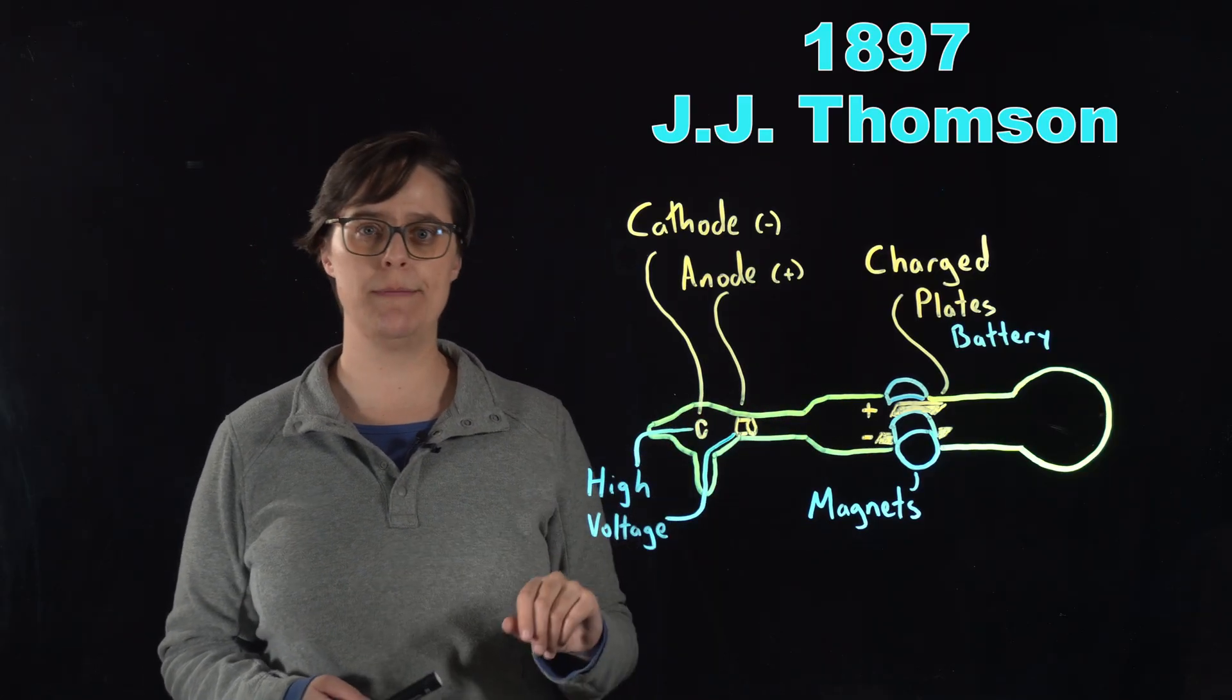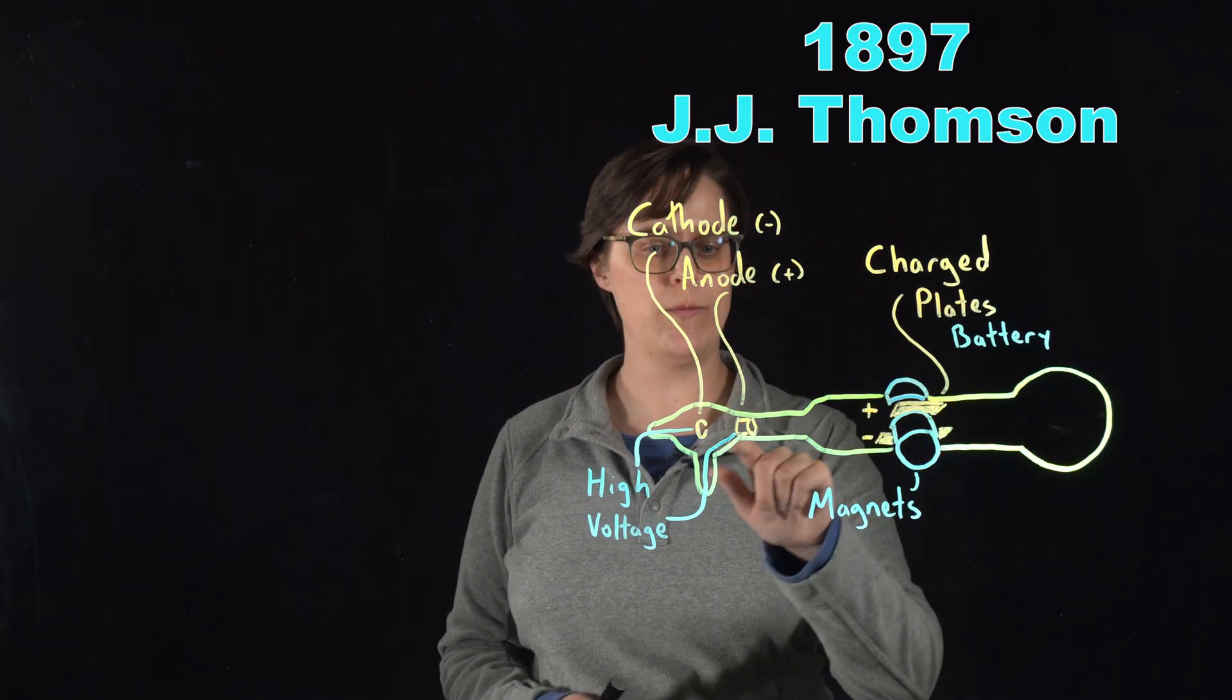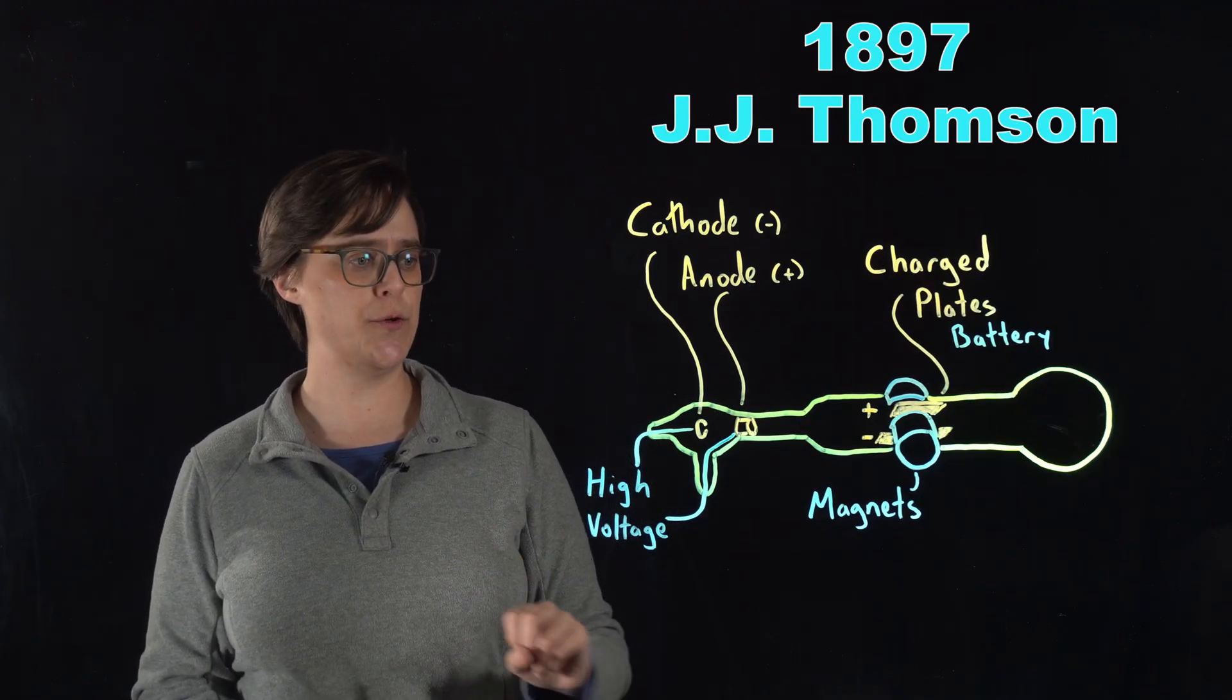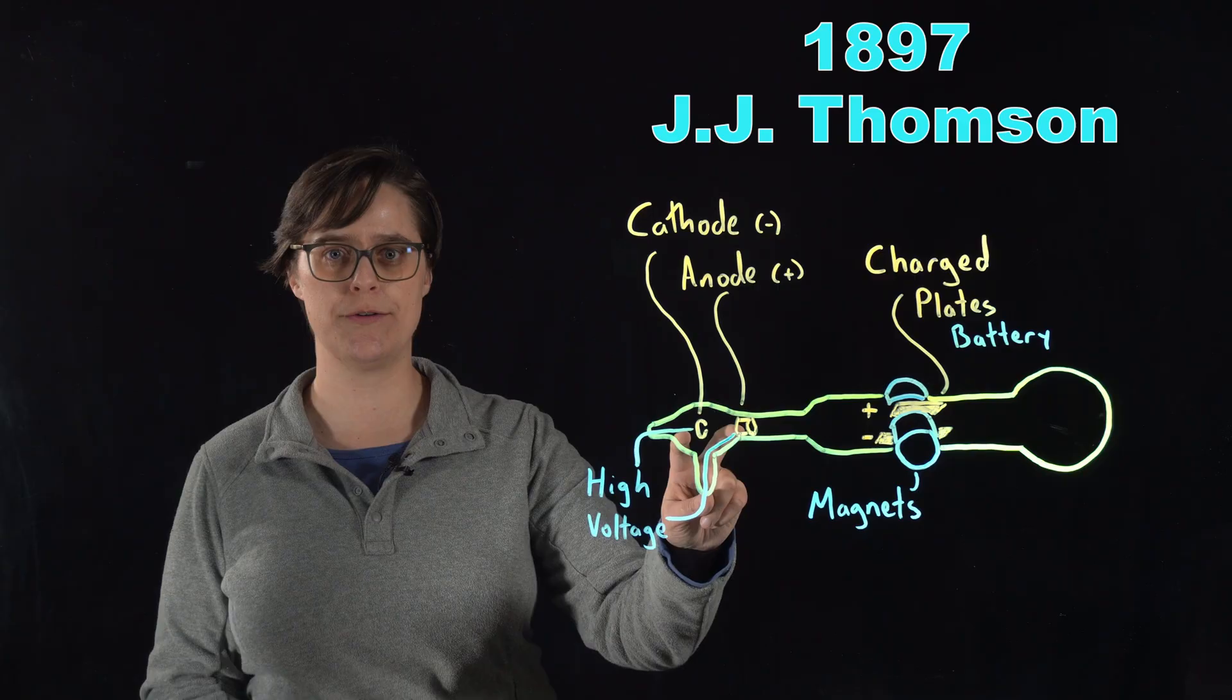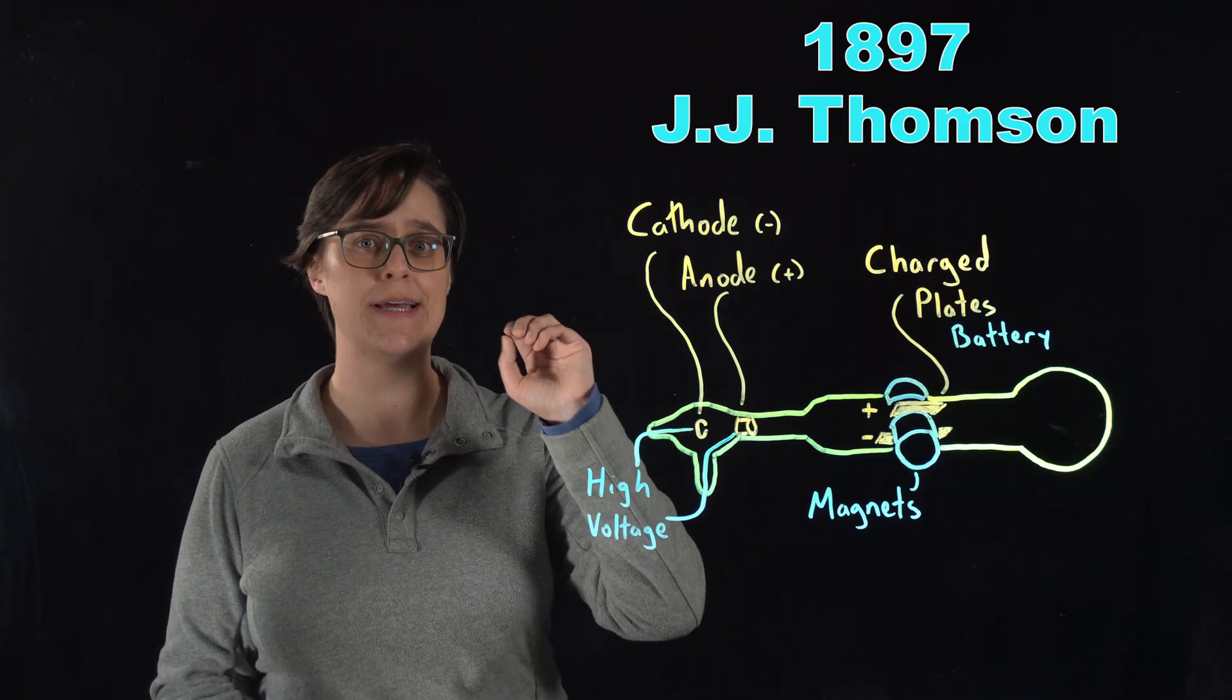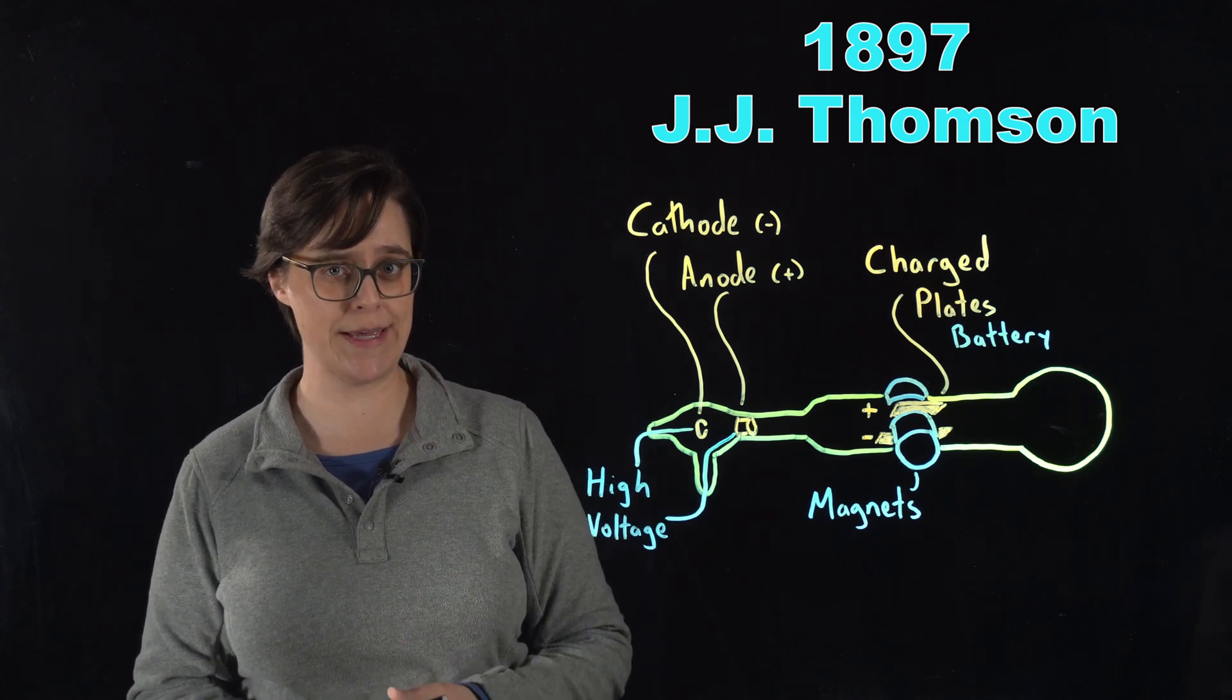His experimental apparatus consisted of a sealed glass tube from which almost all of the air had been removed. The tube contained two electrodes. When a high voltage was applied between these electrodes, a visible beam of light appeared called a cathode ray.